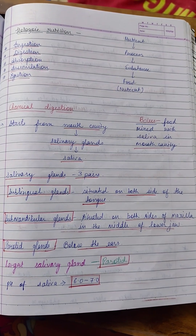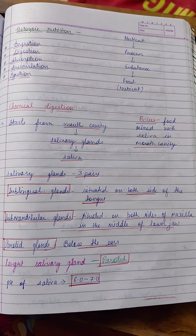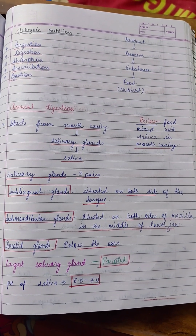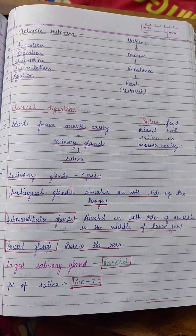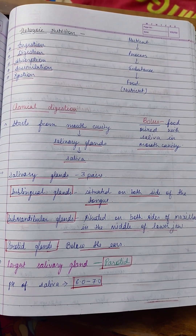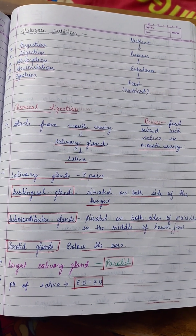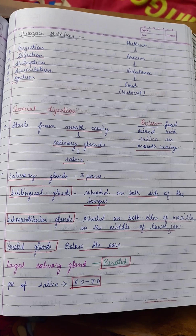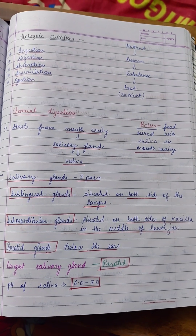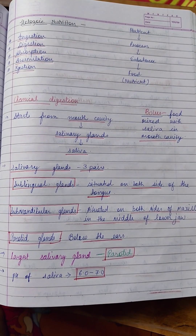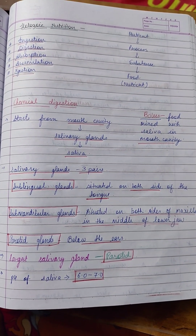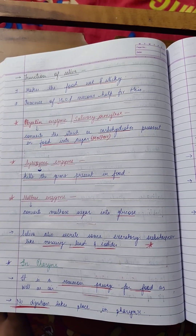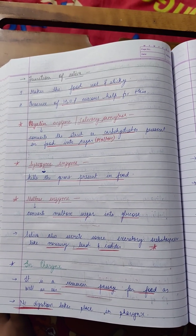Sublingual glands are situated on both sides of the tongue. Submandibular gland is situated on both sides of the maxilla in the middle of the lower jaw, and the parotid gland is below the ears. The largest salivary gland is the parotid gland, and the pH of saliva is 6.2.